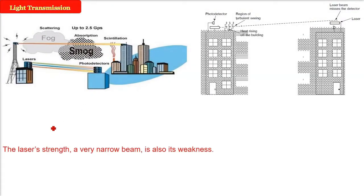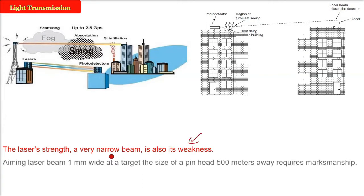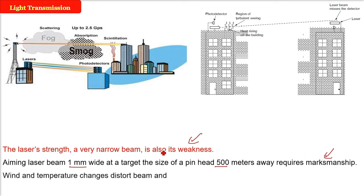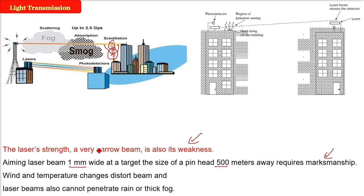The laser's narrow beam is both its strength and its weakness. Aiming a laser beam one millimeter wide at a target the size of a pin head 500 meters away requires marksmanship — a very skilled person. Wind and temperature changes distort the beam. There are effects like scintillation, absorption, and scattering, and all of these affect performance. Laser beams cannot penetrate rain or thick fog.